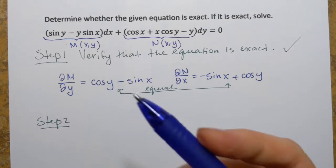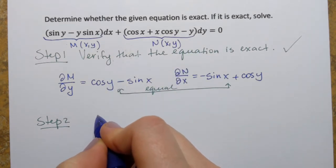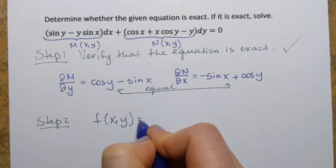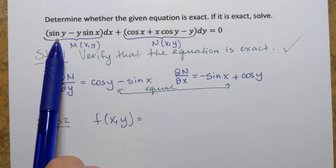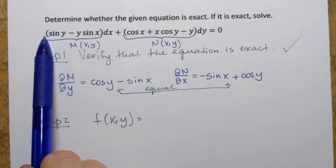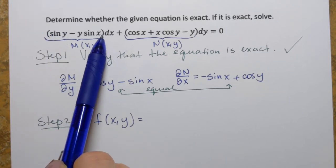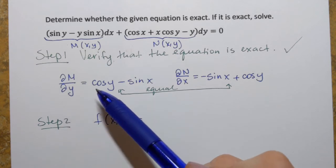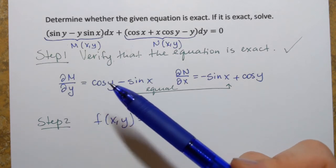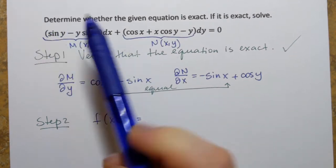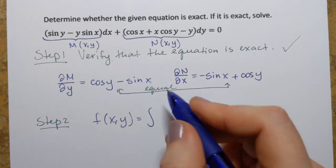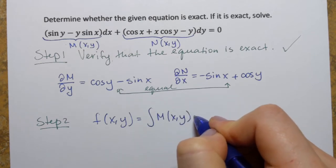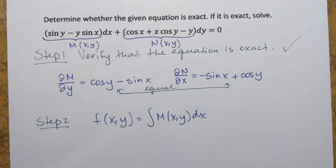In step two, we find function f of xy by taking the partial derivative of f with respect to x — which equals M of xy — and obtaining its antiderivative. In other words, we integrate M of xy with respect to x dx.